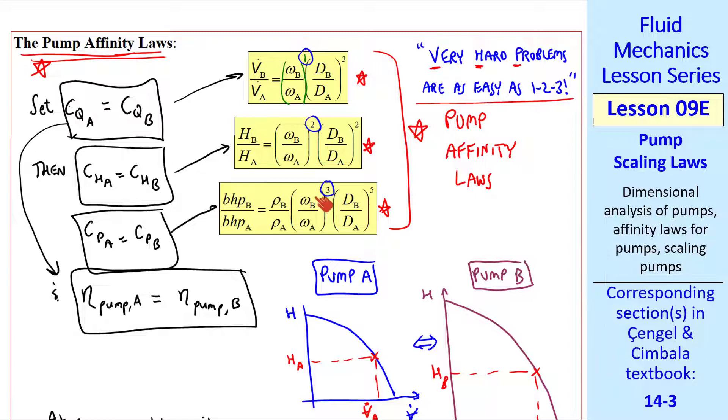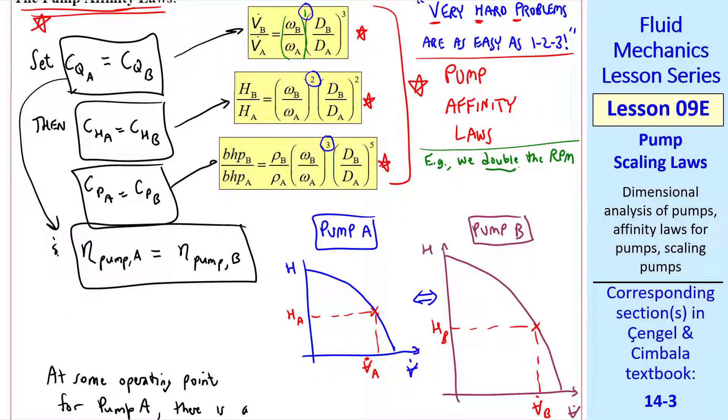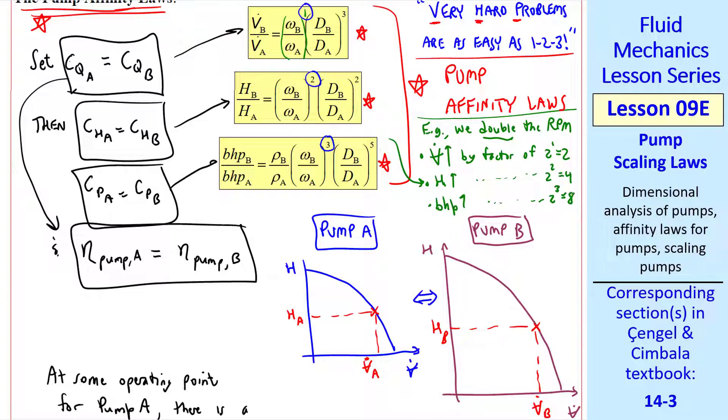For example, if we double the RPM, just increase the RPM by a power of two, we see from these equations that V dot goes up by a factor of two to the one or two, net head goes up by a factor of two to the two equal four, and BHP goes up by a factor of two to the three or eight. So if you have the same pump and all you do is double the rotation speed of the impeller, you get twice as much volume flow rate and you produce four times as much head, but it's going to cost you eight times as much power.